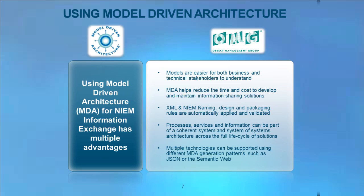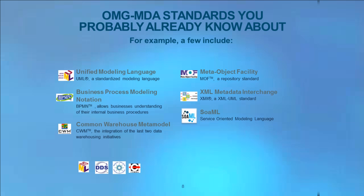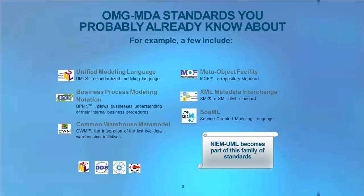However, these different generation patterns are not supported by the current NIEM UML specification. There are many OMG MDA standards you may already know about, such as UML or BPMN for business processes, a Common Warehouse Metamodel for data warehousing, the Meta Object Facility and XMI model interchange between tools, and SOA ML for service-oriented architecture modeling. NIEM UML becomes part of this family of MDA standards.